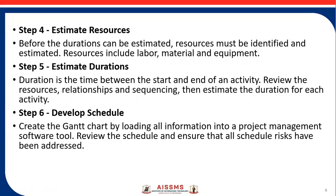Step four is estimate the resources. Before duration can be estimated, resources must be identified — what kind of resources the project or activity is going to require. Resources include labor, material, and efficiency. Step five is estimate the durations. Duration is the time between the start and end of an activity. Review the resources, relationships, and sequencing, then estimate the duration for each activity, because duration is dependent on resource availability as well as the relationships and sequencing between activities.